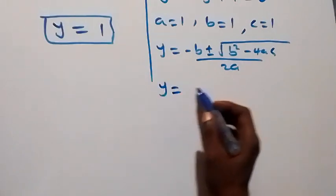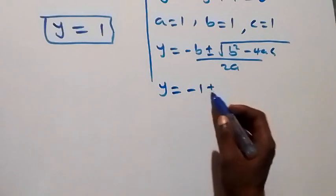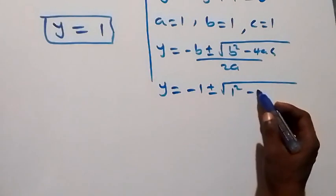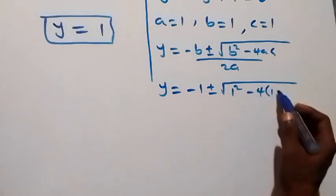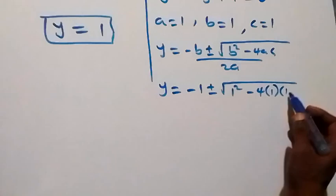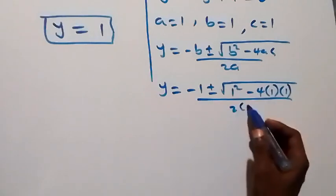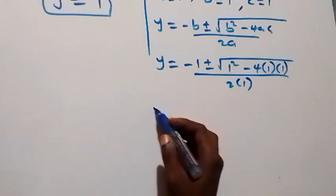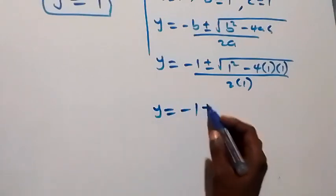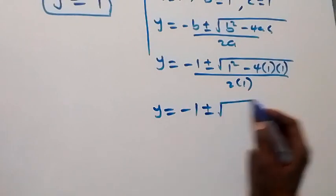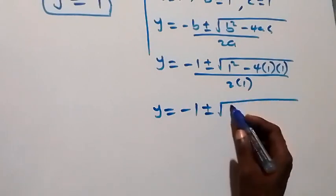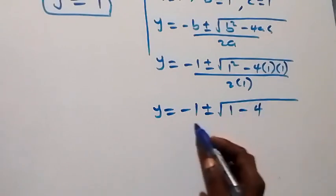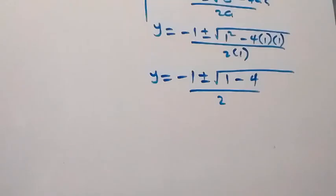Here, y becomes negative 1 plus or minus square root of 1 squared minus 4 times 1 times 1, over 2 times 1. Then we have y equals to negative 1 plus or minus square root of 1 minus 4, that's negative 3, over 2.